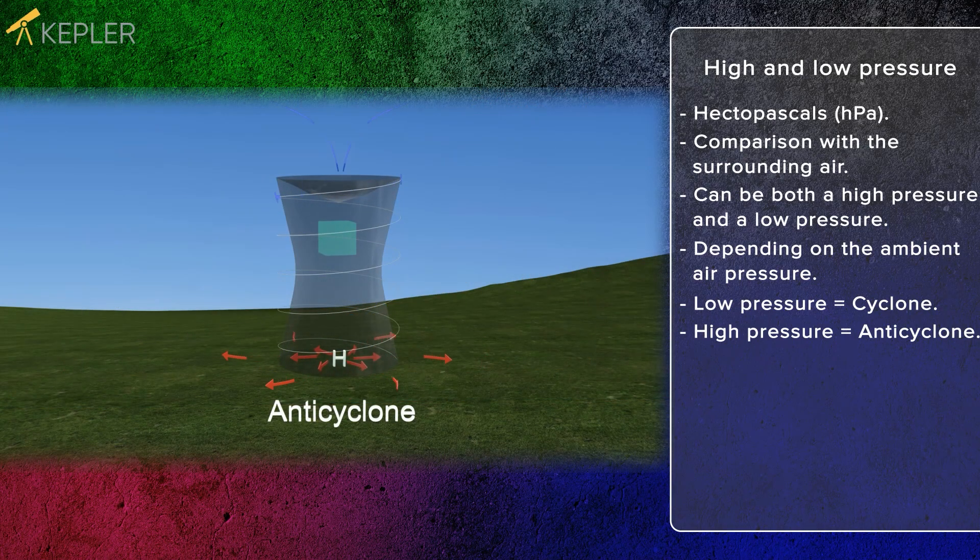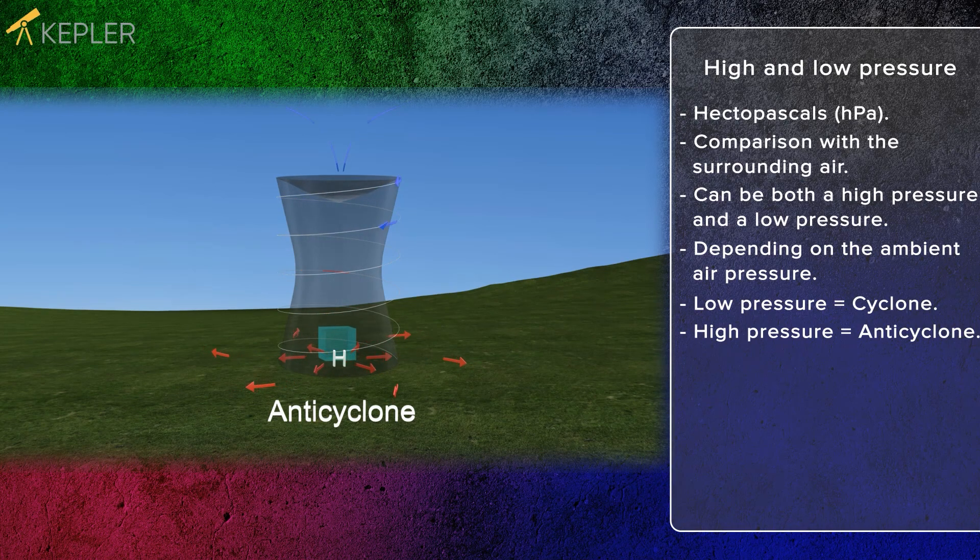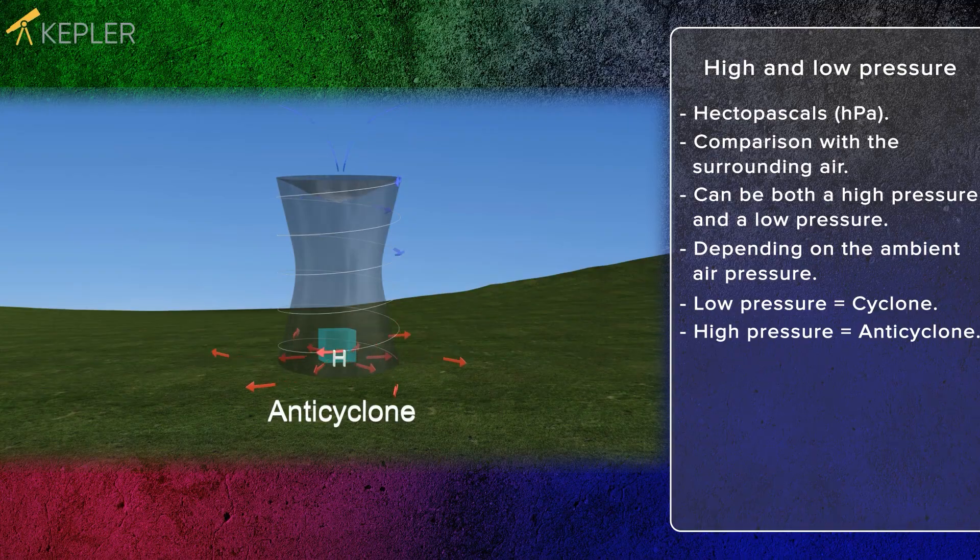As the air sinks and presses against the ground a high pressure area is created there. In the northern hemisphere a high pressure system rotates clockwise.